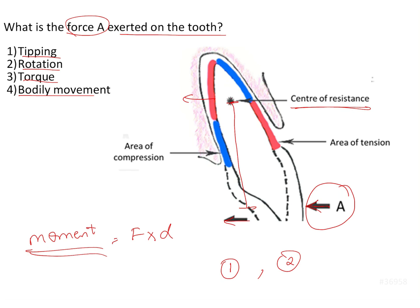The crown is going to rotate lingually and the root is going to rotate buccally. This is going to bring about a tipping kind of movement.